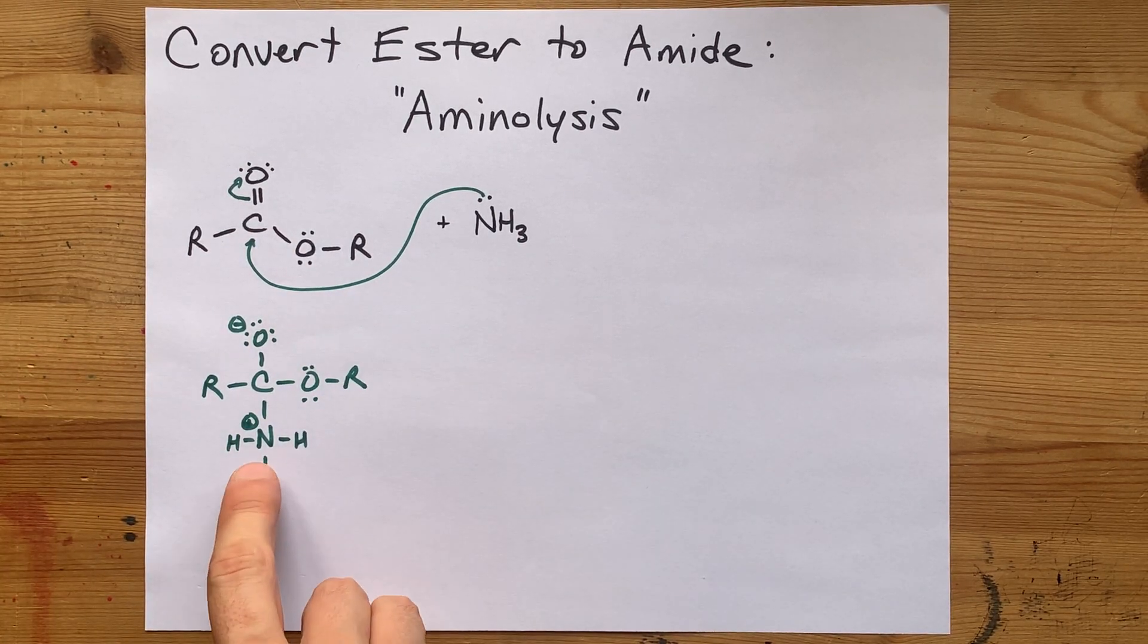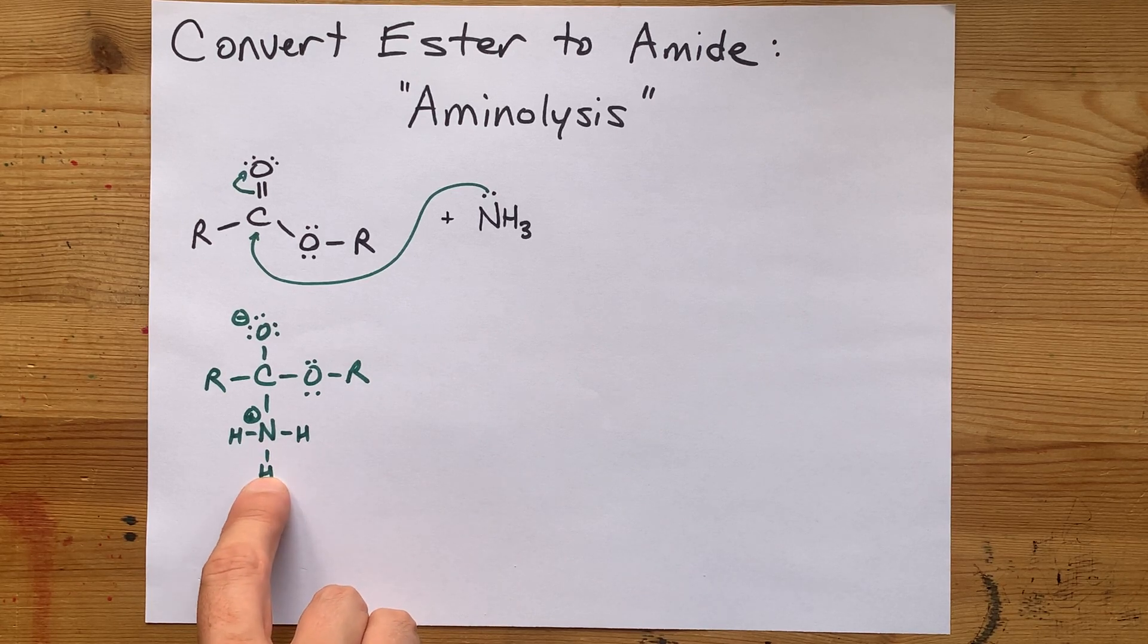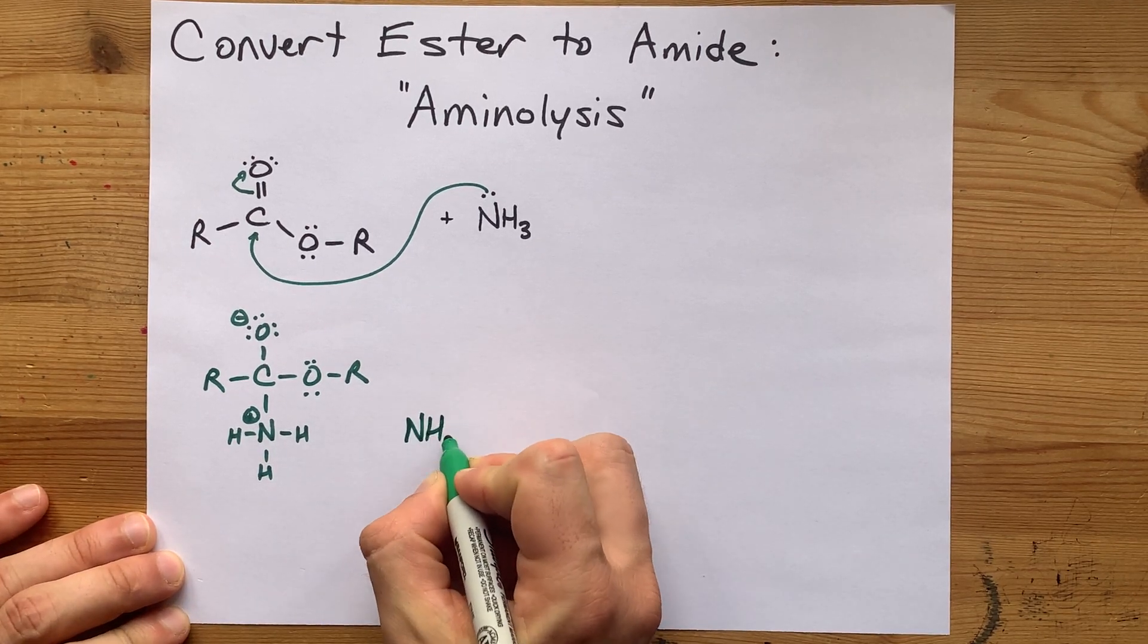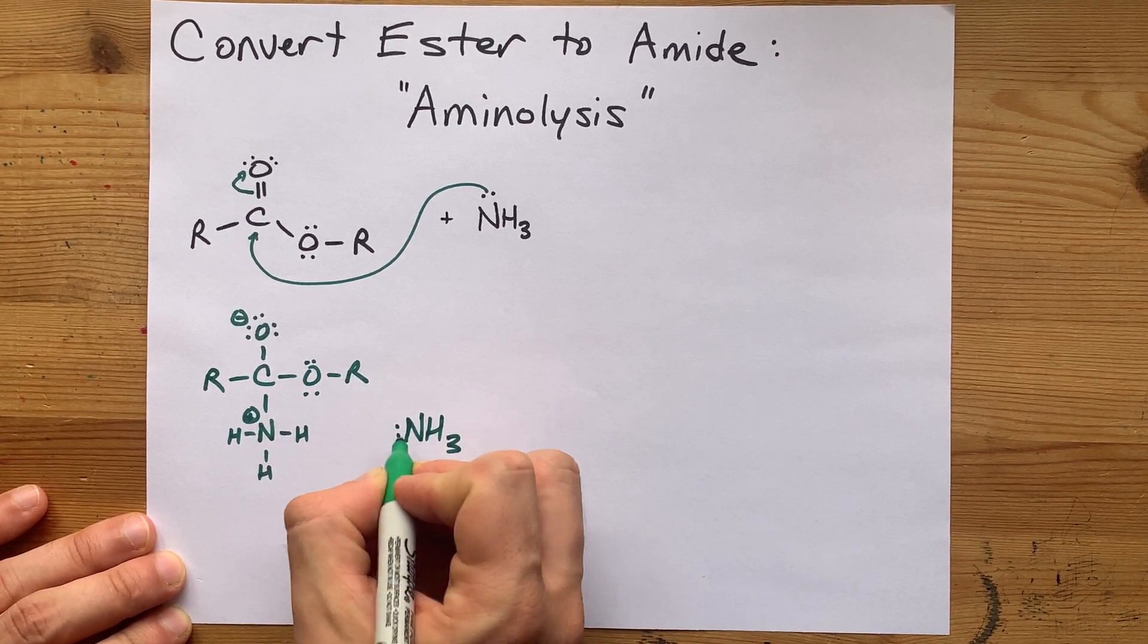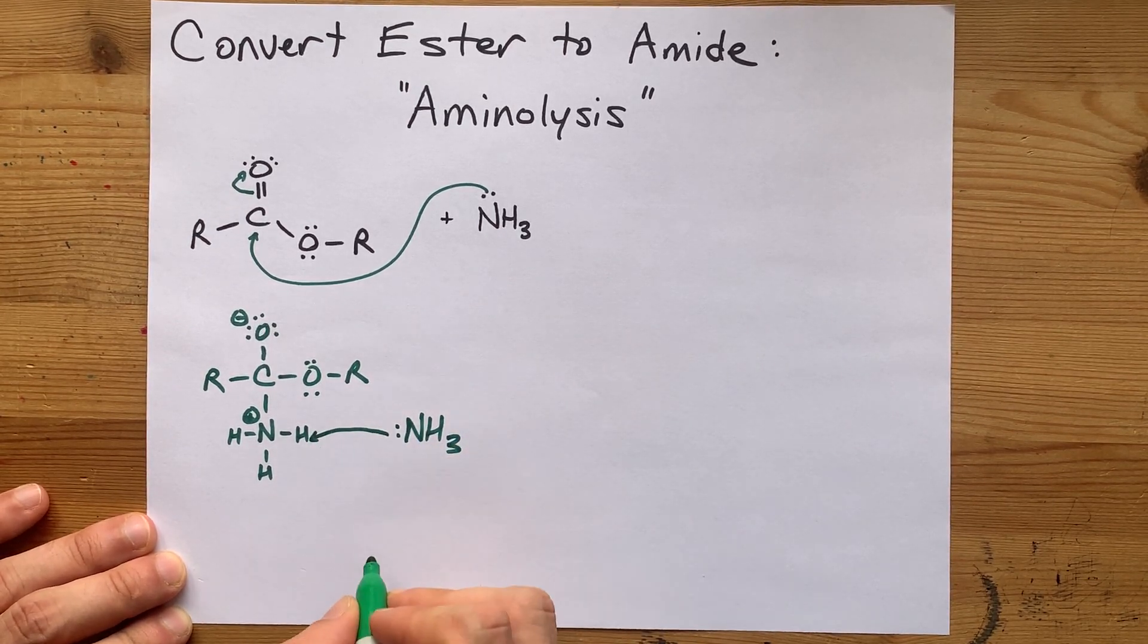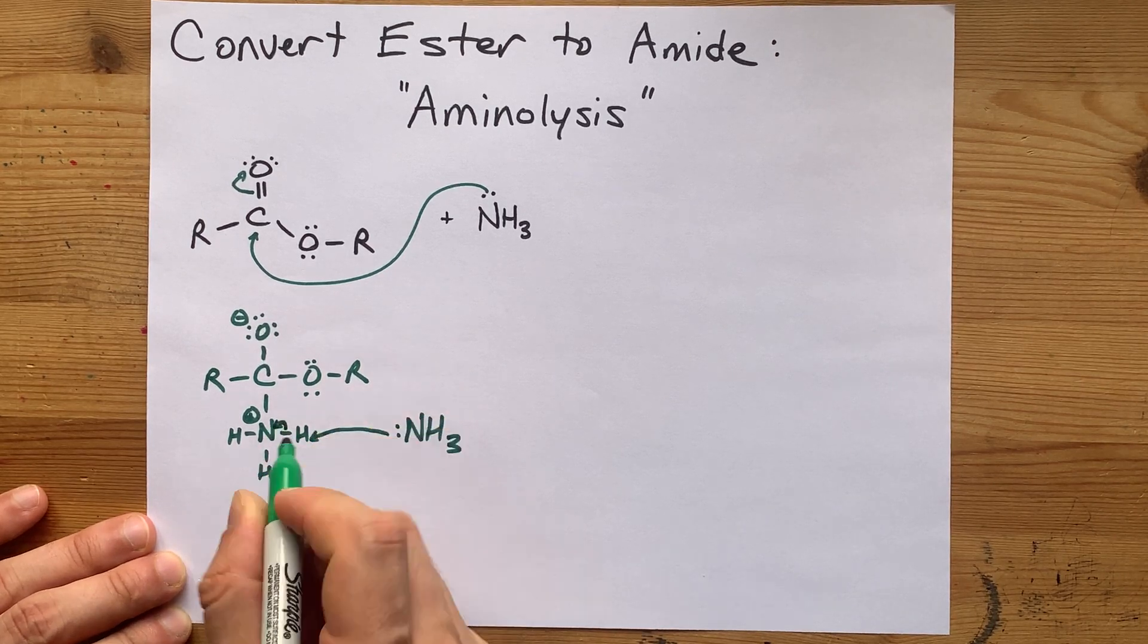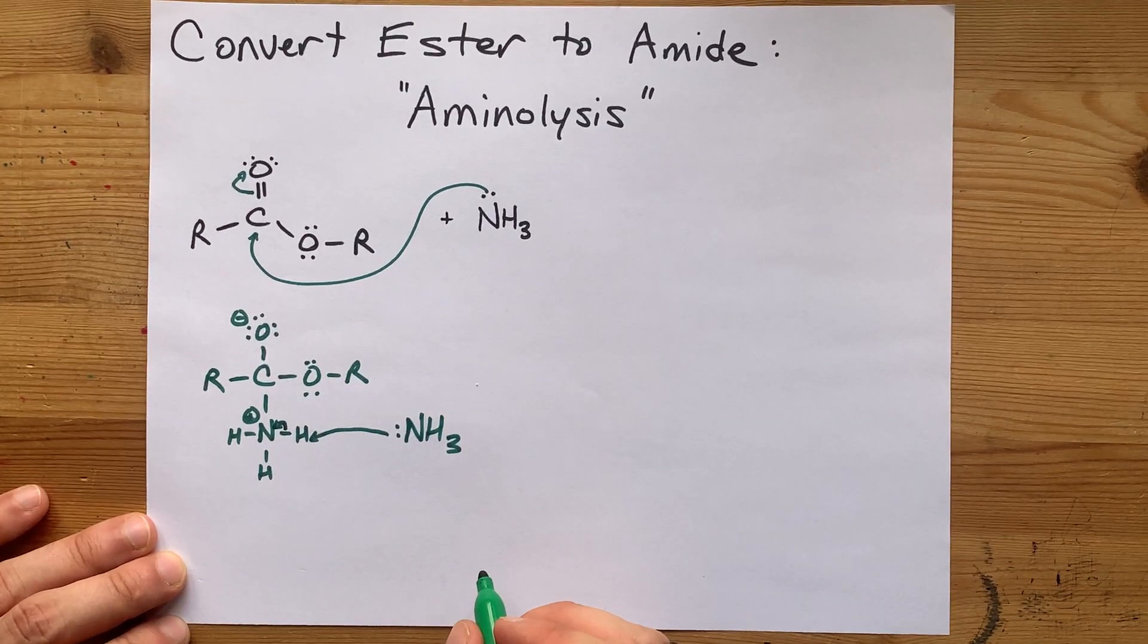Now the next step is to deprotonate this NH3. Often, I see chemists bring another NH3 in to explain it. That lone pair on that NH3 might be attracted to the H that returns a pair of electrons to become a lone pair here.